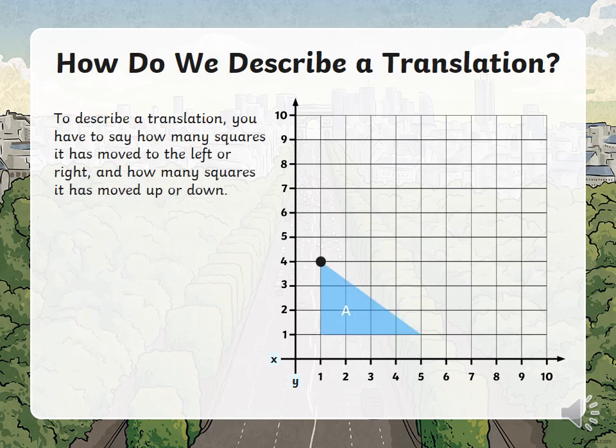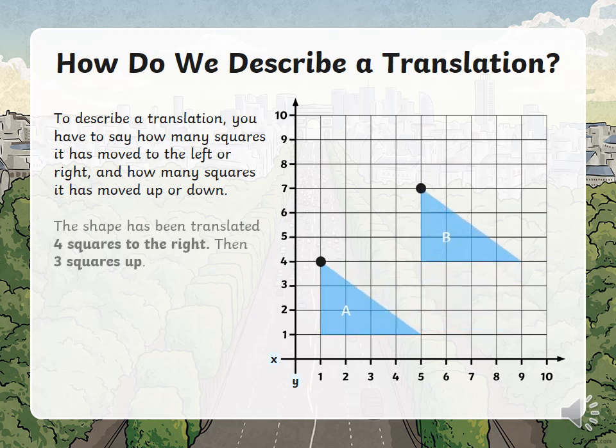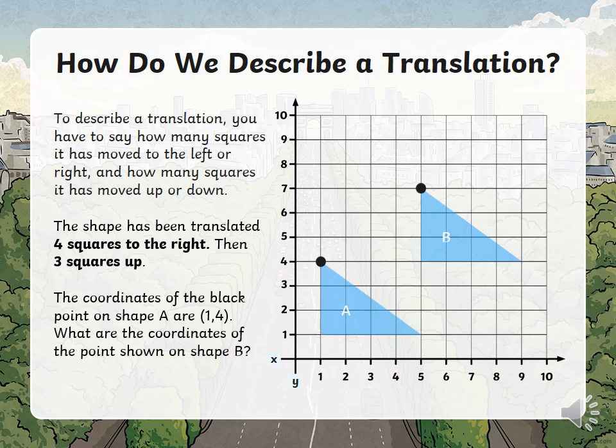To describe a translation you have to say how many squares it has moved to the left or right, and how many squares it has moved up or down. What you need to do is find a corner that you're going to hold and move the shape from. The shape has been translated four squares to the right.